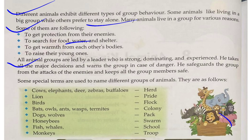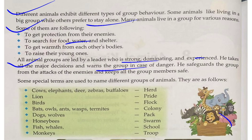All animal groups are led by a leader who is strong, dominating, and experienced. The leader takes all the major decisions for the group. He warns the group in case of danger and safeguards all the group members from attacks by enemies.